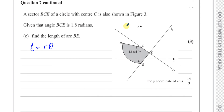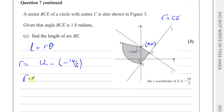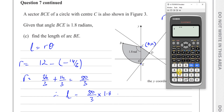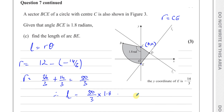The radius is equal to CE. C is at (0, 12) and E is at (0, negative 14 over 3), so the radius equals 12 minus negative 14 over 3, which is 36 over 3 plus 14 over 3, giving 50 over 3. Therefore the length of the arc equals R times theta: 50 over 3 times 1.8, which gives 30 units. That's the length of arc BE.